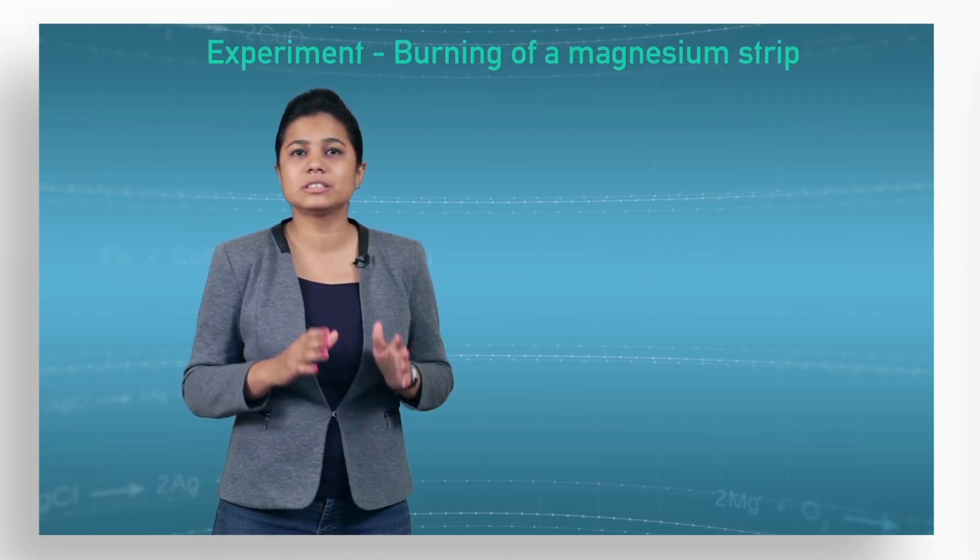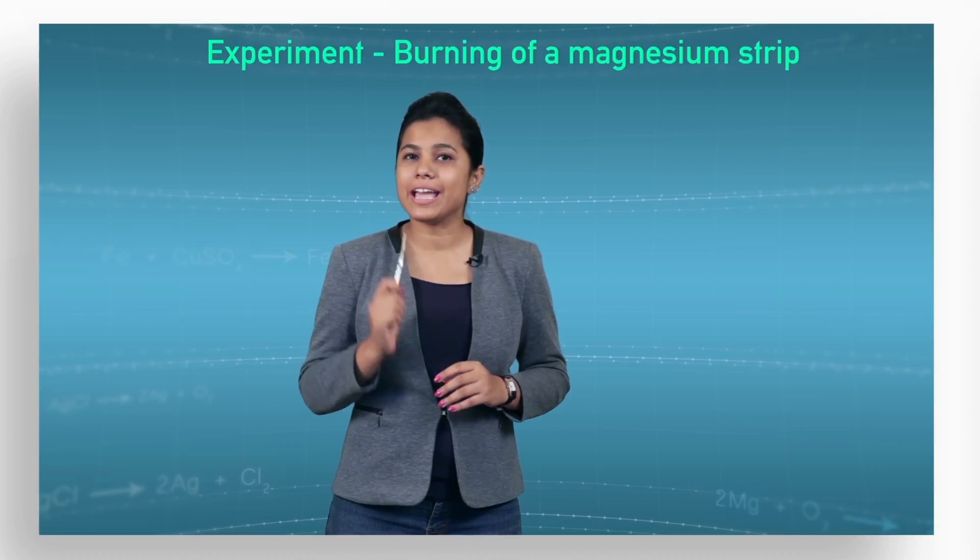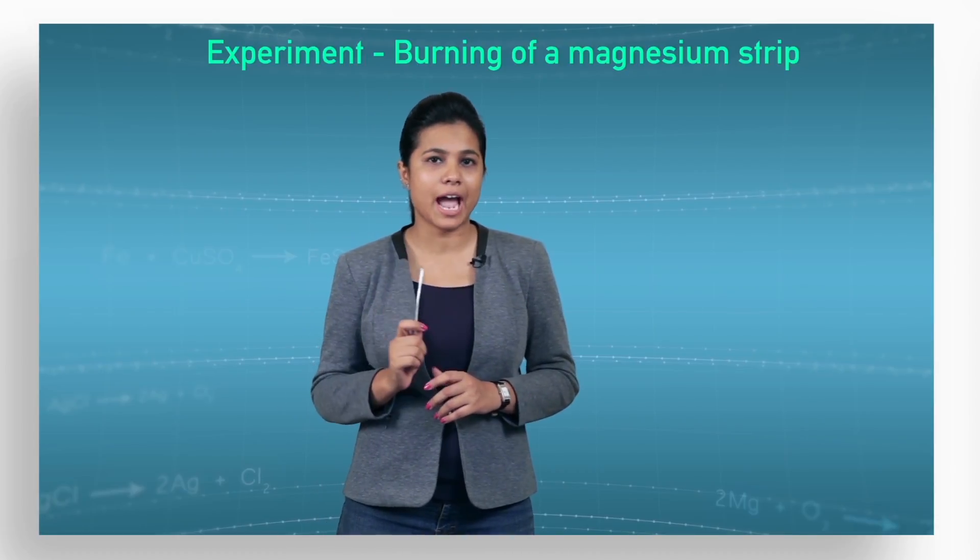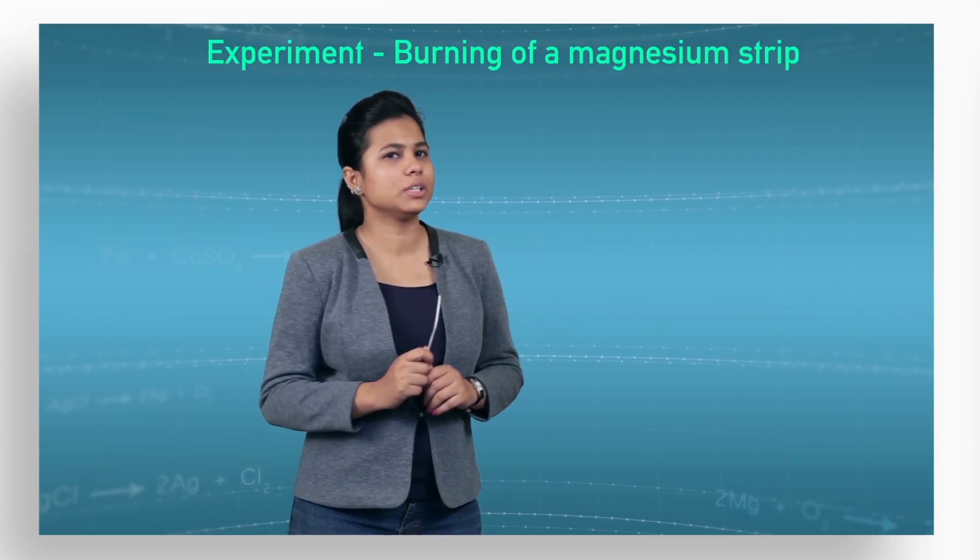So let's conduct an experiment to find out what are the changes which occur in chemical reactions. Let's perform the first simple experiment which is burning. Now I have a magnesium strip in my hand which we are going to use in this activity. So let's begin with the activity.